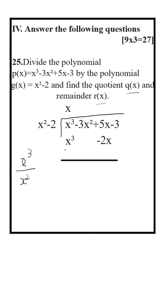Now change the sign of the second number — minus plus. x cube and minus x cube get cancelled. Minus 3x square — bring it down. 5x plus 2x equals 7x.